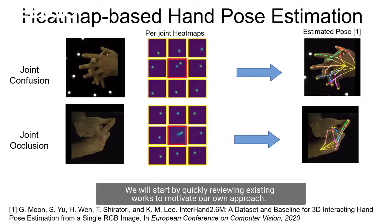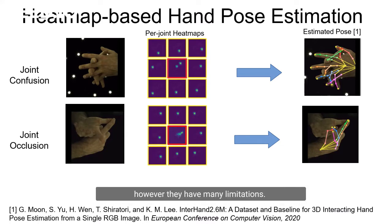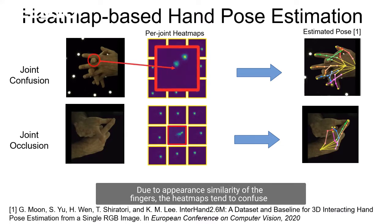We will start by quickly reviewing existing works to motivate our own approach. Using per-joint heatmaps has been shown to result in better accuracy than other approaches. However, they have many limitations.